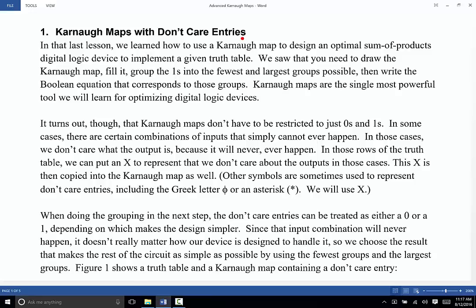A good example would be if there is absolutely no possible way that an input combination could possibly occur, then in that case you would not really care what the output is going to look like.